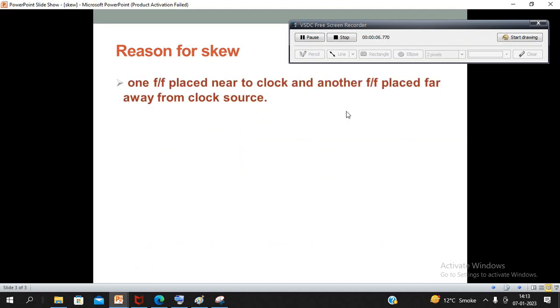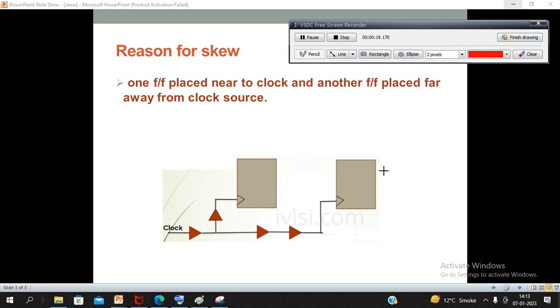Suppose the first reason is one flip-flop is placed near to the clock and another flip-flop placed far away from the clock source. So in the diagram you can see, suppose this flop is somewhere sitting here.